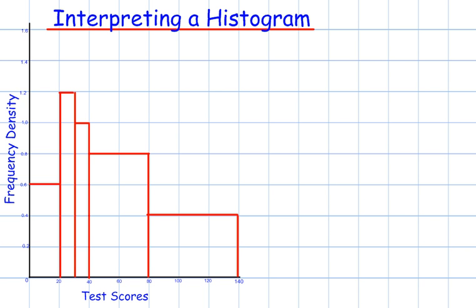Interpreting a histogram. You will either be given a whole histogram and be asked to complete the table, or you will be given part of a histogram and part of a table and you have to complete both. You could also be asked how many people were surveyed altogether. In this example we will be given a whole histogram and we have to complete the table.